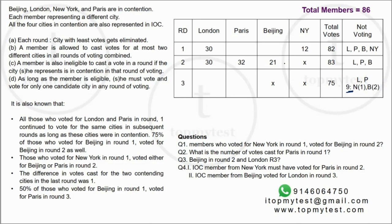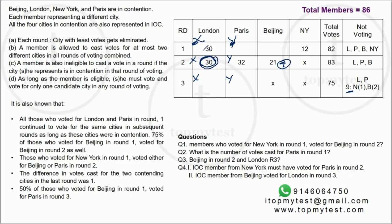The additional criteria states: all those who voted for London and Paris in round one continue voting for the same cities in subsequent rounds. So London's 30 core voters stay at 30, Paris's core voters stay constant. The only changes come from New York and Beijing voters switching. Since London got exactly 30 in both rounds one and two, all 30 London votes are the same loyal voters — Paris is the one that changes.